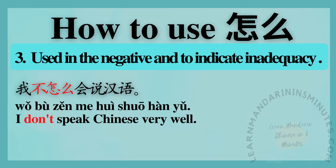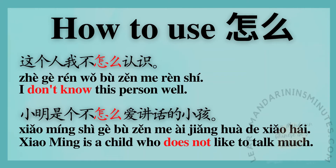Sentence examples. 我不怎么会说汉语。 — I don't speak Chinese very well. 这个人我不怎么认识。 — I don't know this person well.